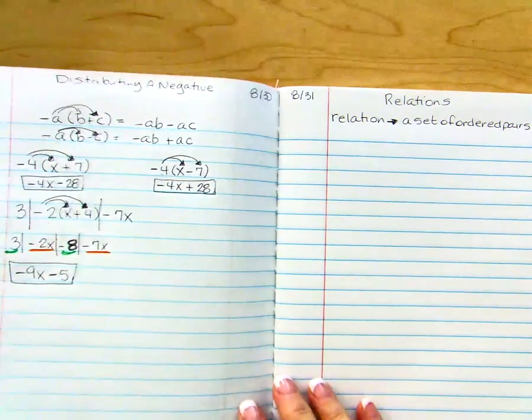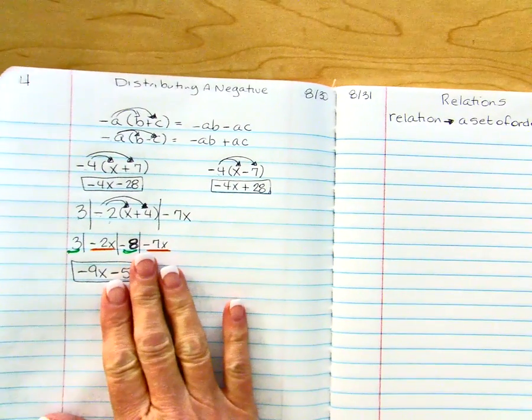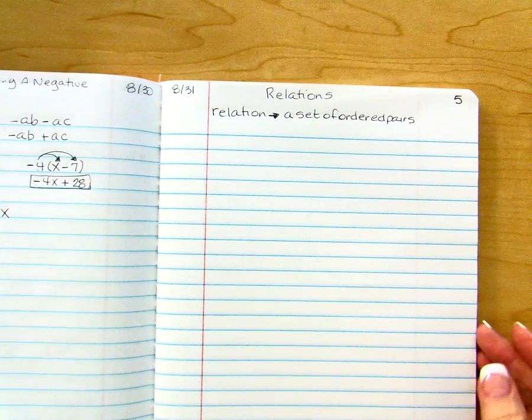Hello, Stings. In this video, we will be looking at relations. This information will go on the page opposite of our distributing a negative. This will be page 5.